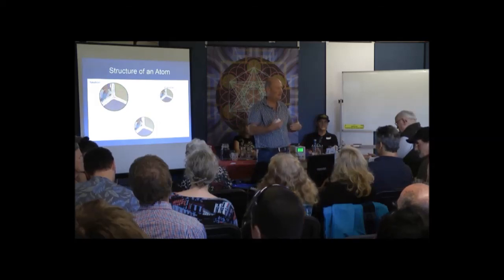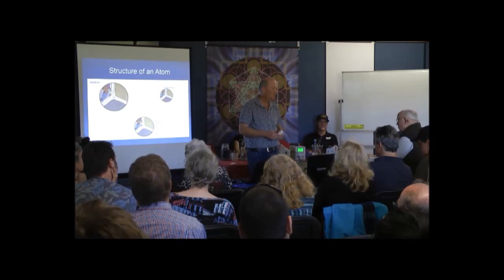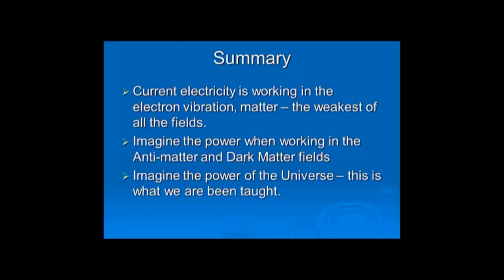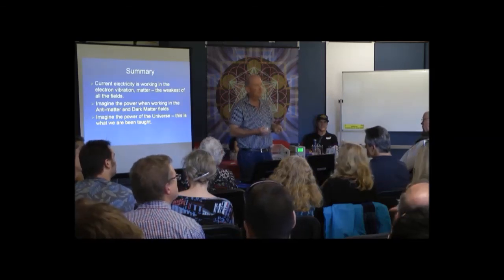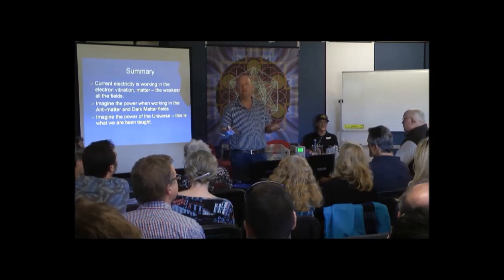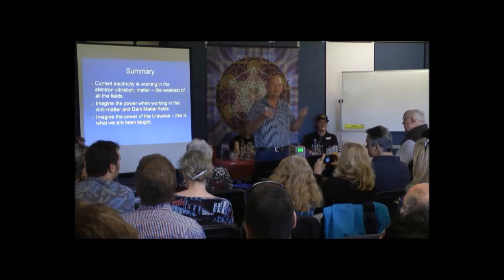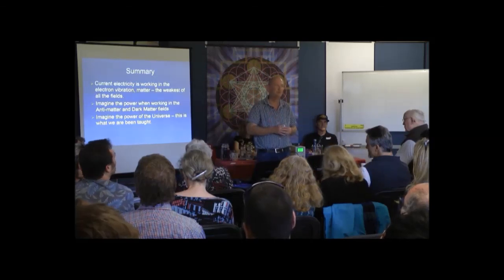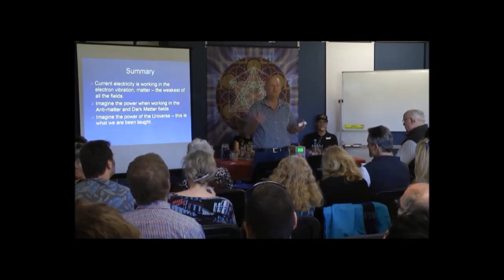When you look at radiation, it's that decay of radiation — and what do we get? It gives off huge amounts of magnetic fields, and it's those magnetic fields which give us the radiation poison. The current electricity is working on the electron vibration — the matter, which is the image of the two. Imagine the power when working in the anti-matter and the dark matter fields. Imagine the power of the universe. That's where we are starting to move forward to the next level. The motion of the planets in the universe — that's the energy we are able to tap into. It's enormous energy. And it's not free, it's perpetuating — nothing's ever destroyed. It's not free energy, it's just perpetual energy. That's what we are now able to start tapping into — just scratching the surface.